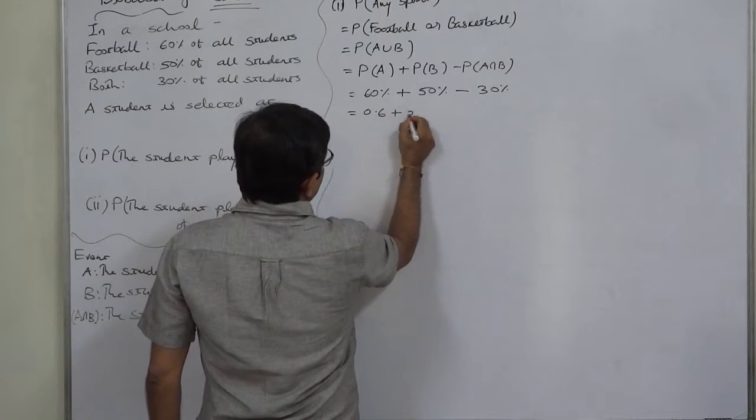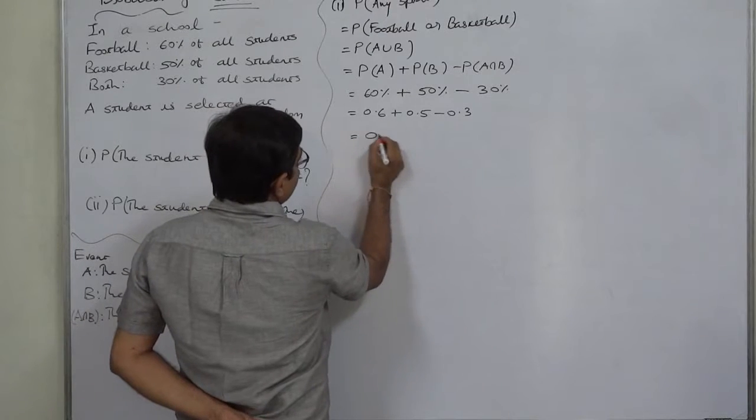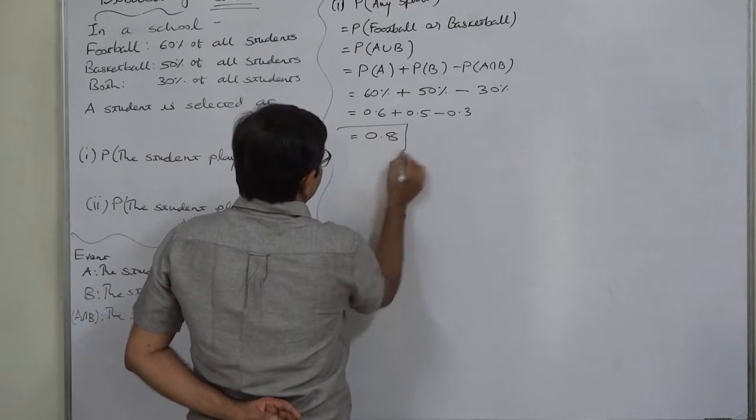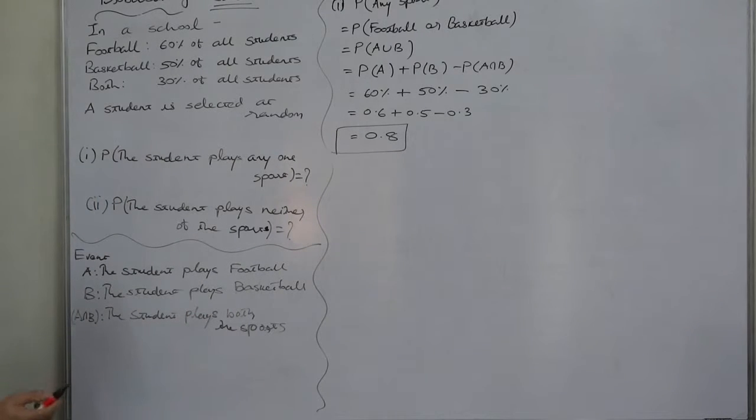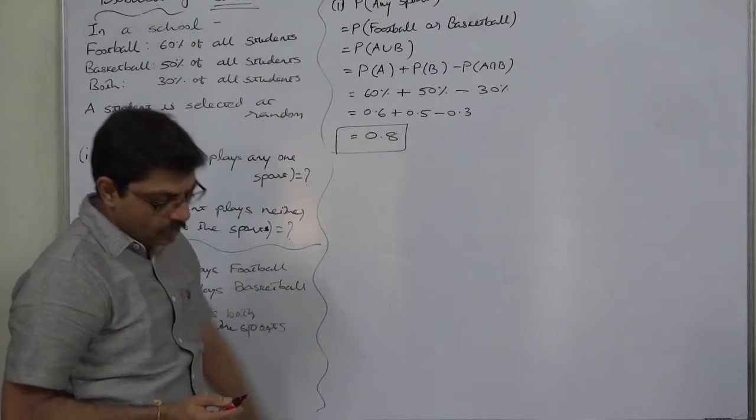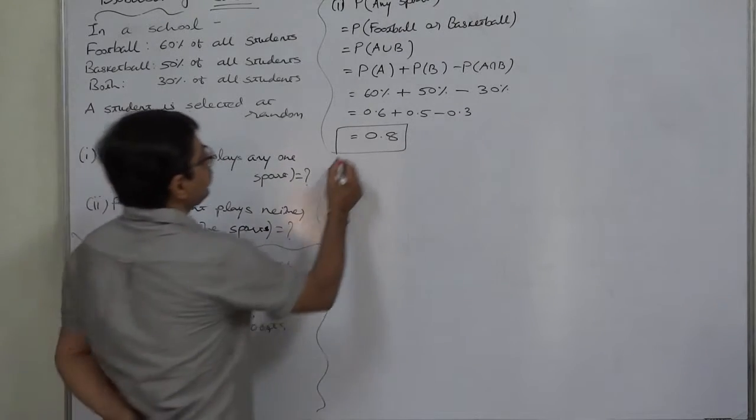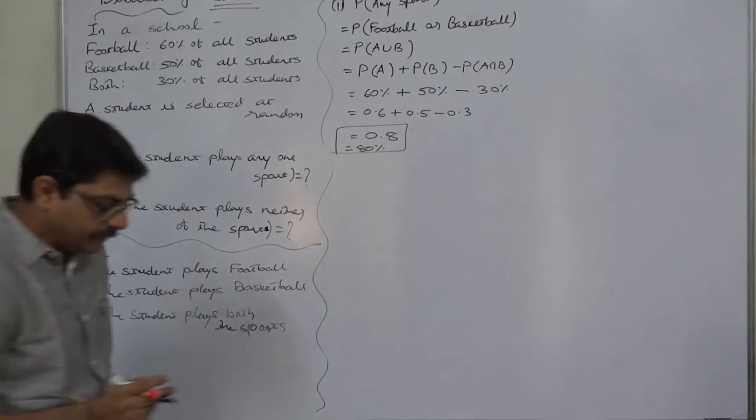0.6 plus 0.5 minus 0.3, so it comes to 0.8. So if a student is selected at random, the probability that the student plays any one sport, either football or basketball, is 0.8 or 80%, quite a high percentage.